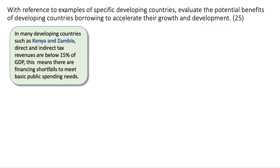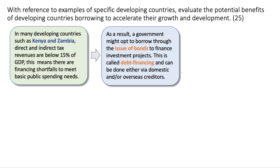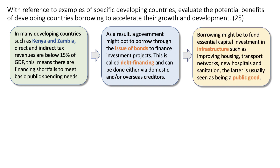Let's think about how we shape a really good A-star 25 mark answer. In many developing countries, such as Kenya and Zambia, tax revenues are low — below 15% of GDP — and this means there are big financing shortfalls to meet basic public spending needs. As a result, a government such as the Kenyan government might decide to borrow money through the issue of bonds to finance investment projects. This is called debt financing and can be achieved via domestic and/or overseas creditors.